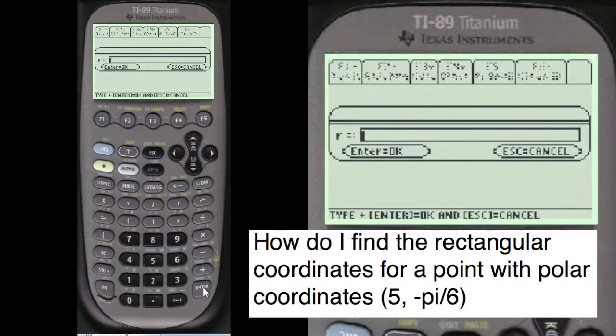This problem that I'm showing you came off of Yahoo. Some student wanted to know the answer to this. So I wrote it down exactly the way he or she put it. And then I'm also going to do another one where radius equals 2 and theta equals pi.